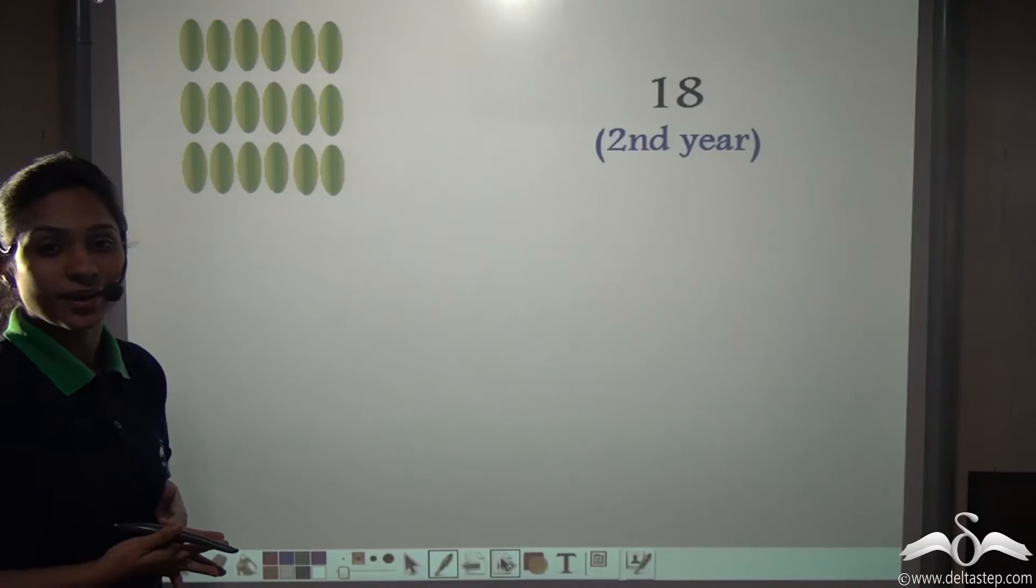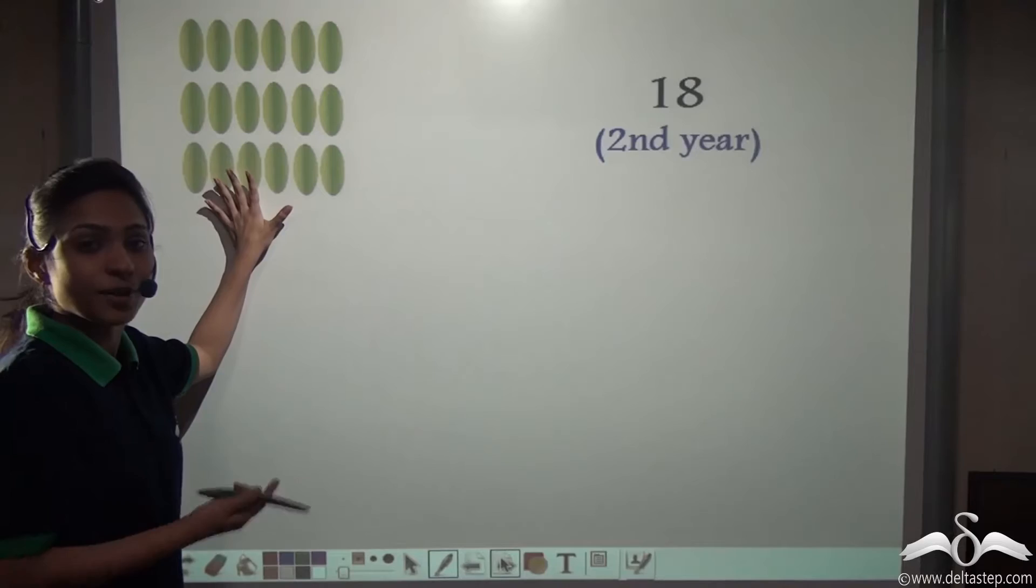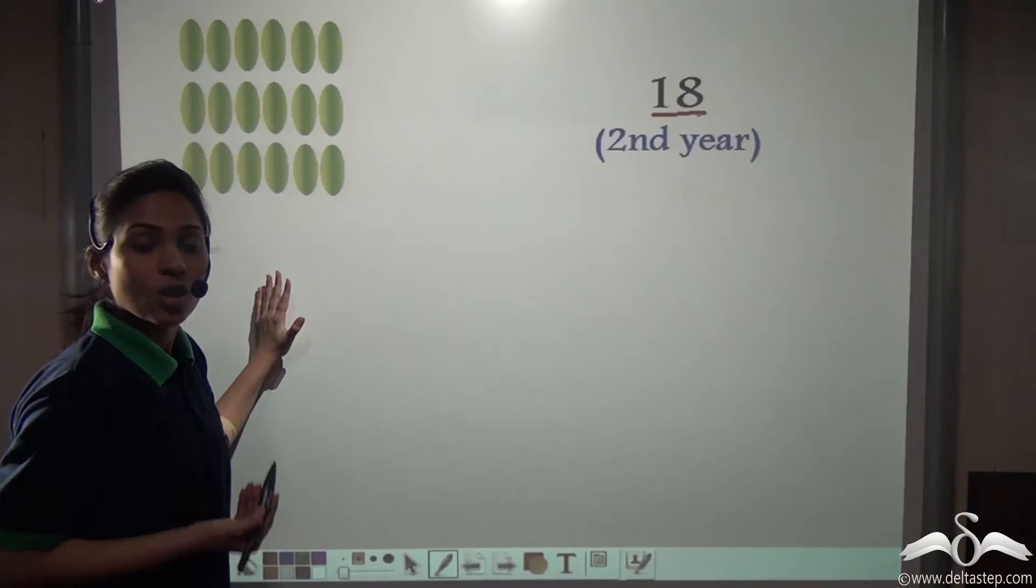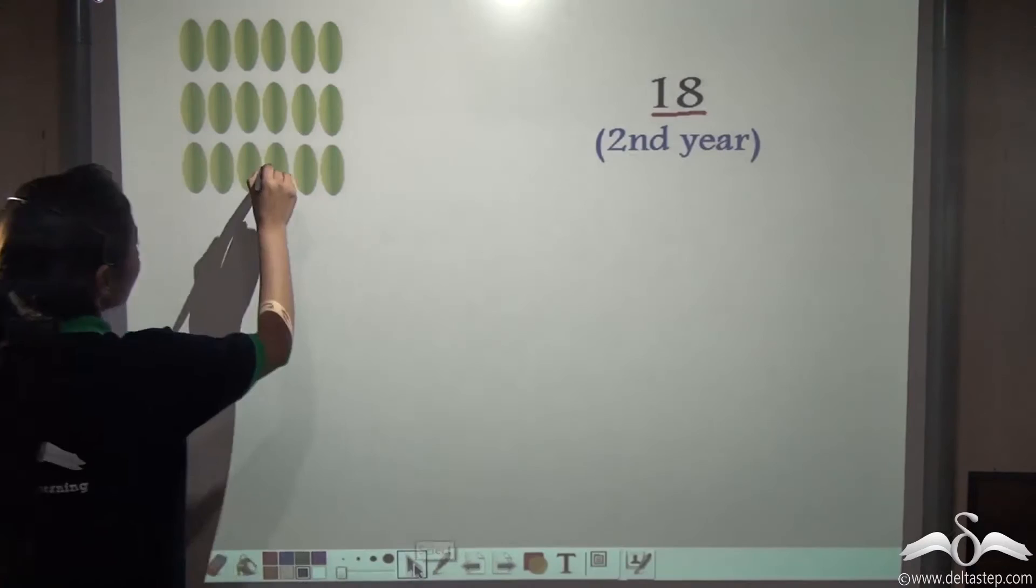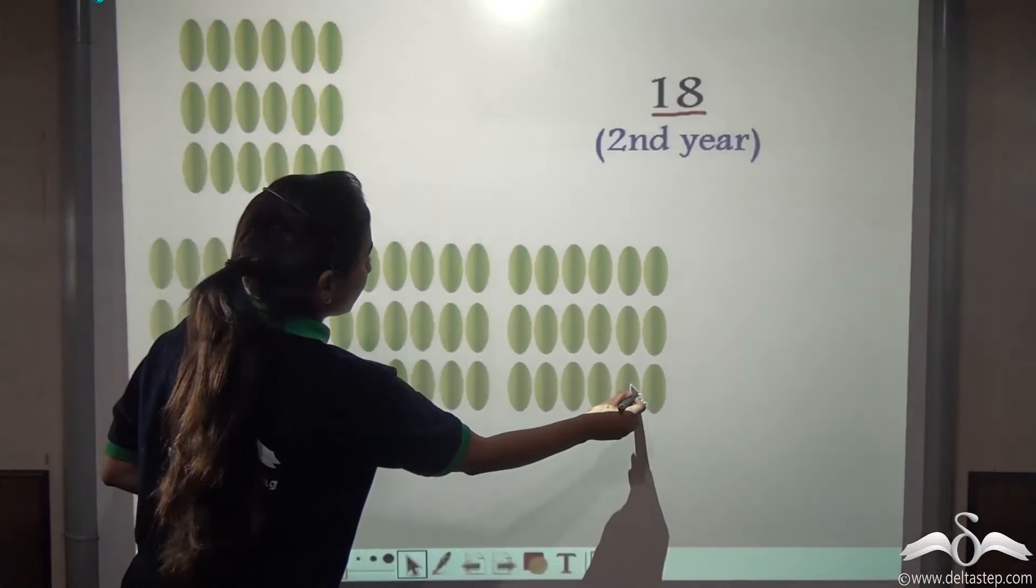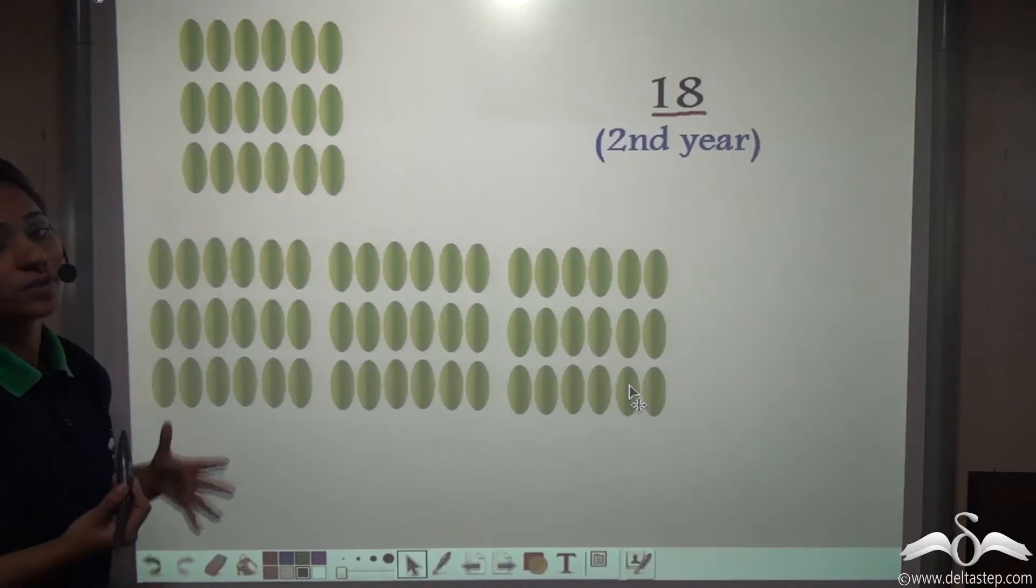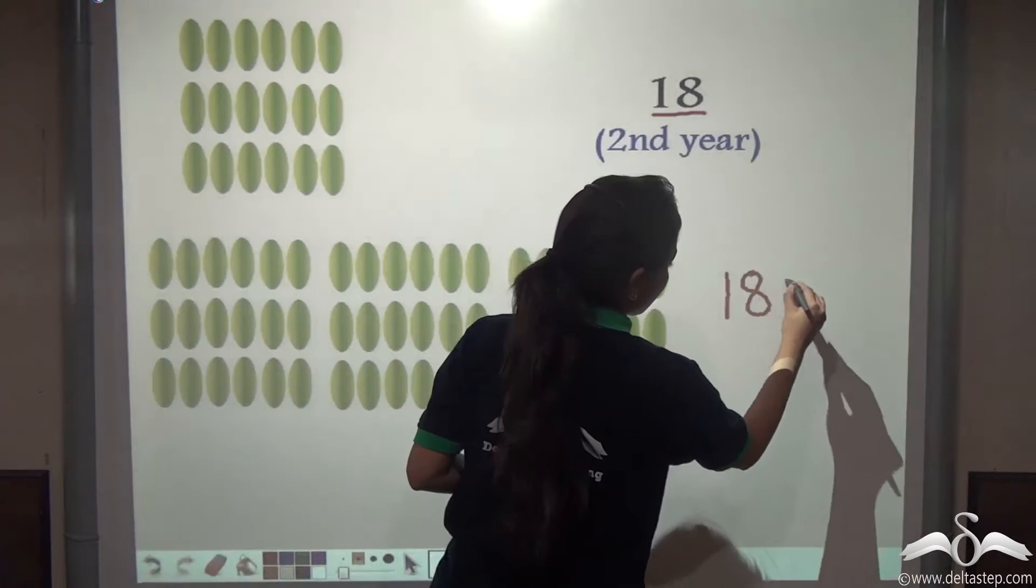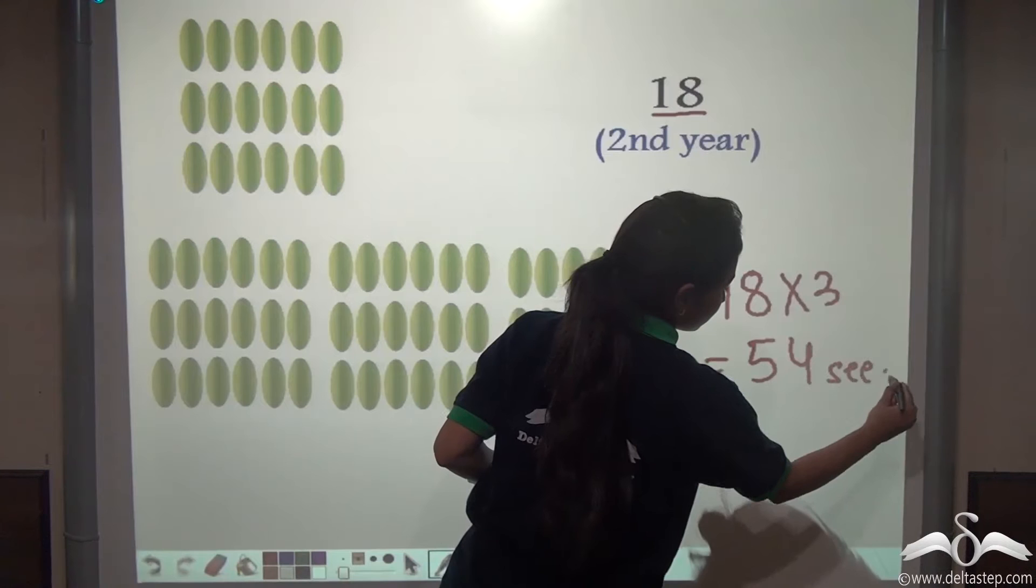Now in the third year again she was very excited and she again tripled the number of seeds she had planted in the previous year. That was 18. Now she again tripled this number. So how many seeds did she plant in the third year? Thrice the number of seeds she had planted in the second year. So how many did she plant? 18 into 3, that is 54.